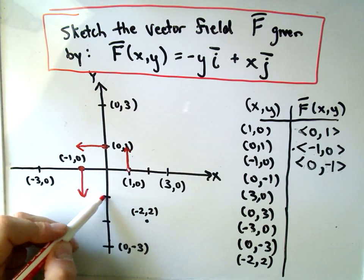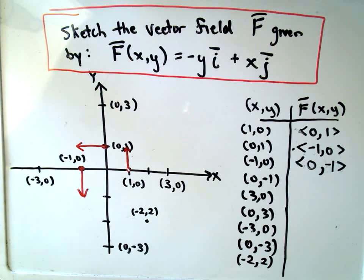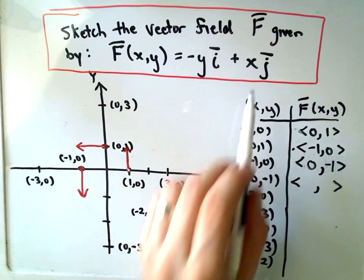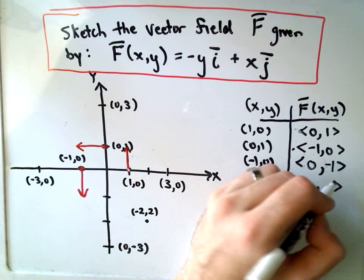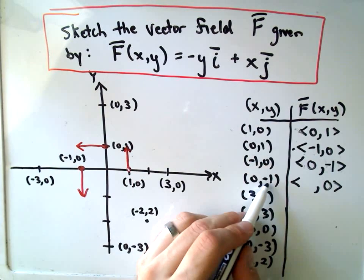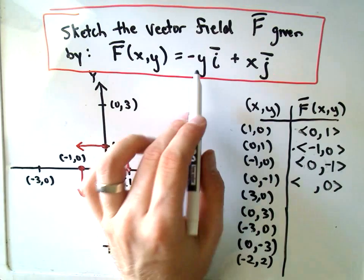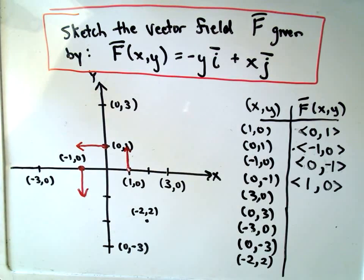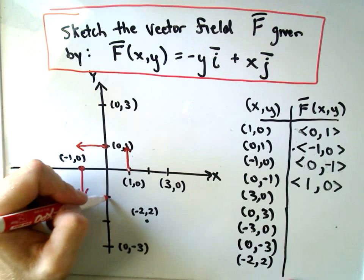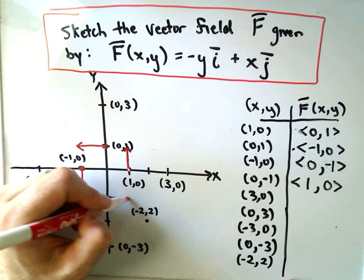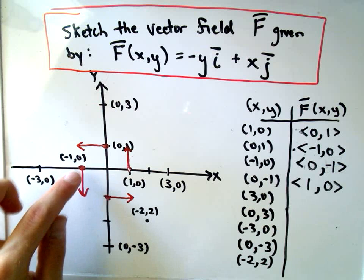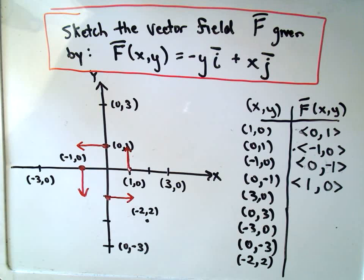And likewise, we could plug in (0,-1). If I plug zero in for x into my formula, I'll get zero out for the j component. If I plug negative one in for the y component, I'll get negative of negative one or positive one. And that's going to be a vector just pointing one unit to the right. So there's a few vectors associated with four different points.